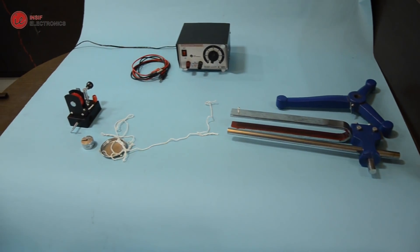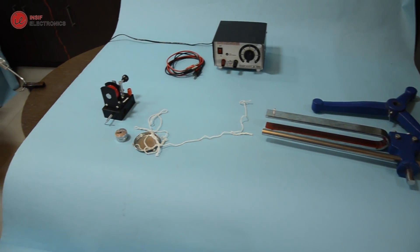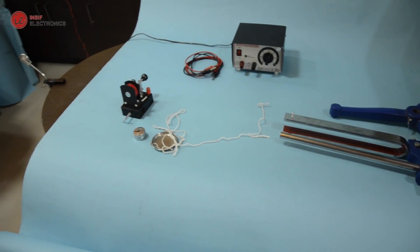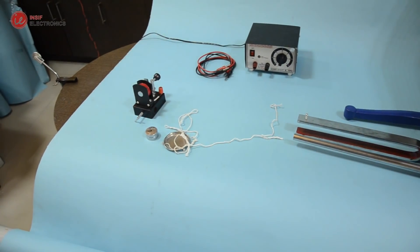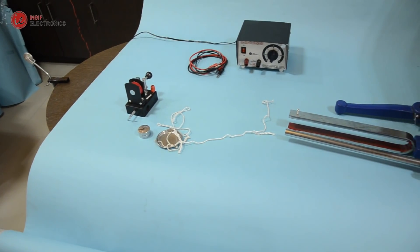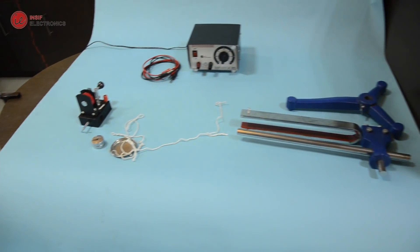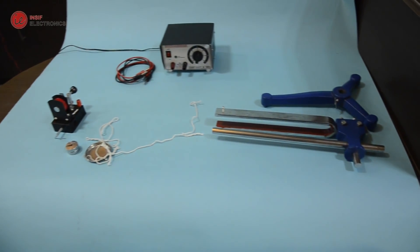The apparatus used are: tuning fork with stand, electromagnet, frictionless pulley with mounting, thread, set of weights, a light pan, battery eliminator 3A, and two connecting wires.